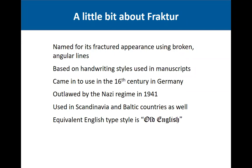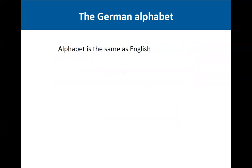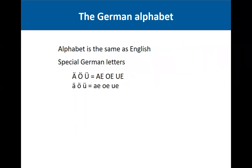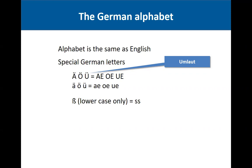A little bit about the German alphabet: it is essentially the same as the English alphabet, but there are a few special or additional letters you won't find in English. Primary among these are the umlauted vowels — A, O, and U with two dots above them. The umlaut stands for an E, representing the combinations AE, OE, and UE. Sometimes you will see words spelled that way. There is also a special character called an Eszett, which looks kind of like a B and can be confused with a B. It only appears in lowercase. In all-caps headlines, it will be represented by a double S, and it does represent the double-S sound. Q, X, and Y are rarely used except in names and foreign words.